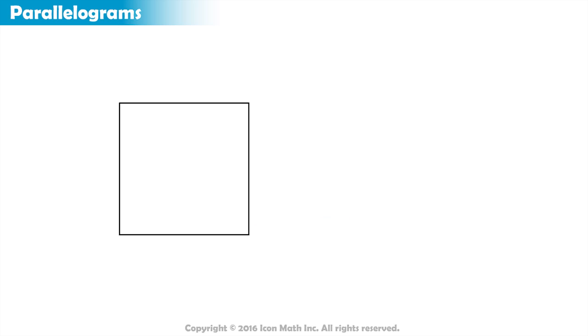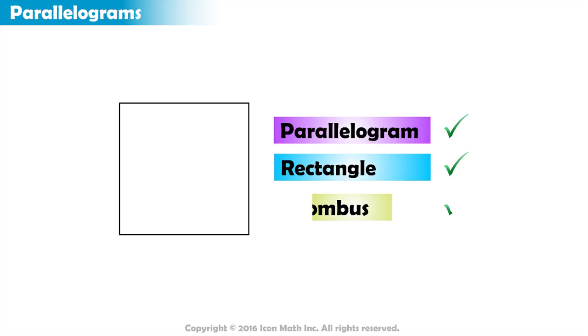So, a square is a special type of parallelograms, rectangles, and rhombuses.